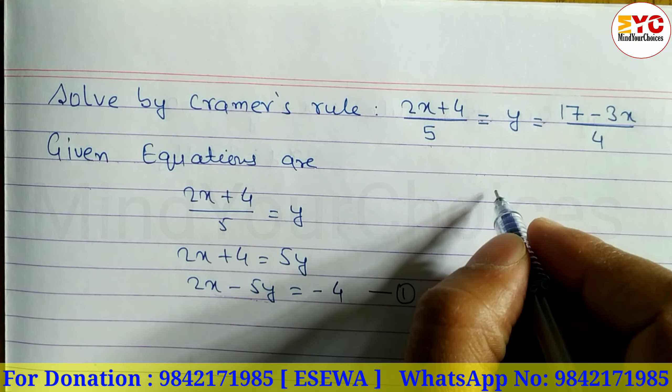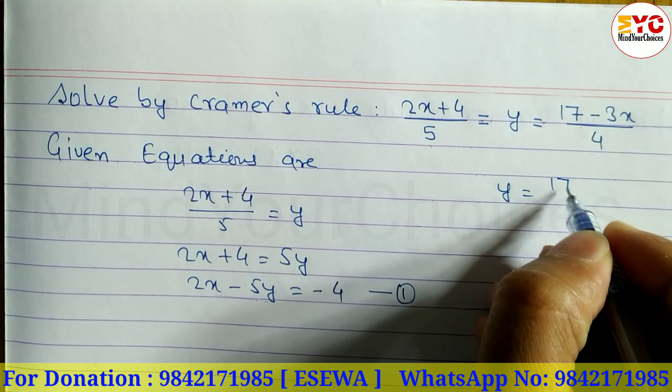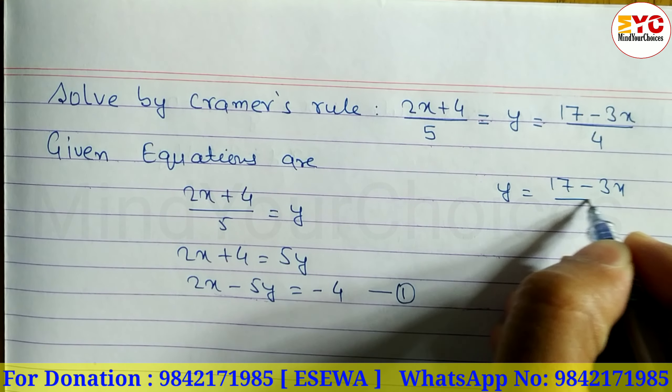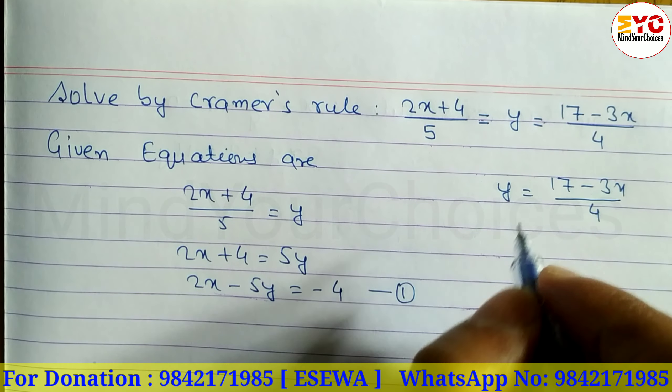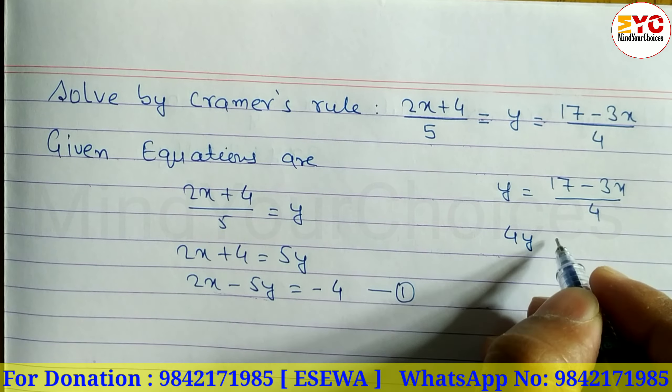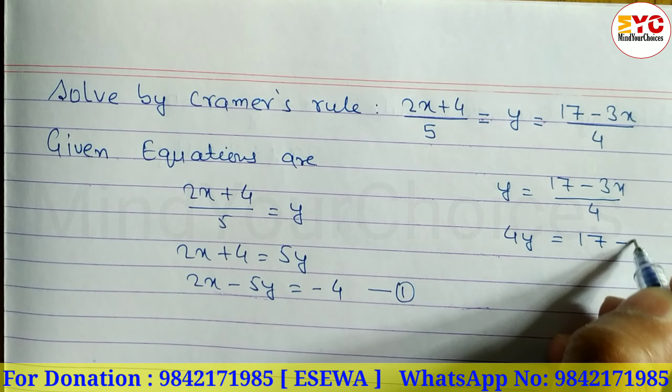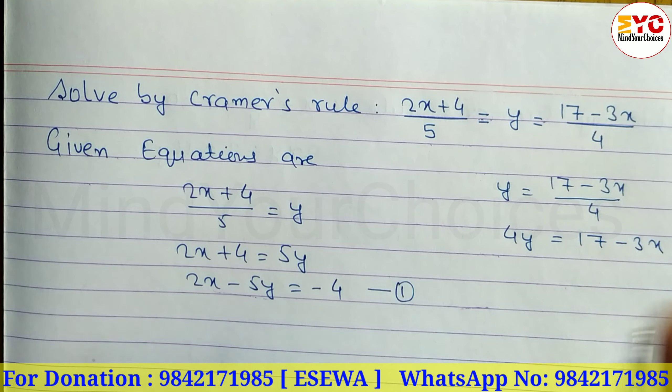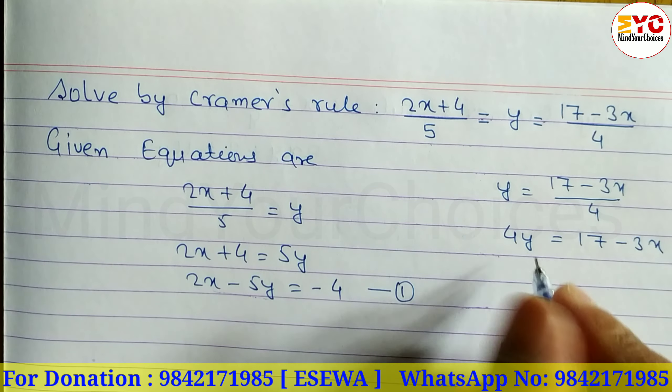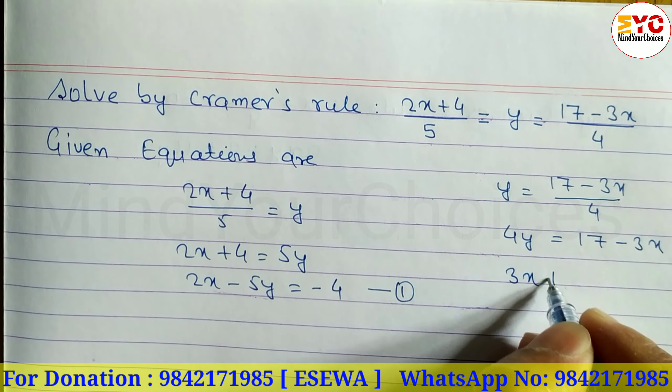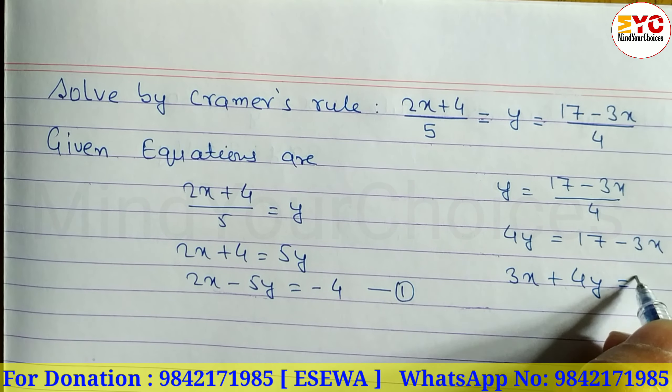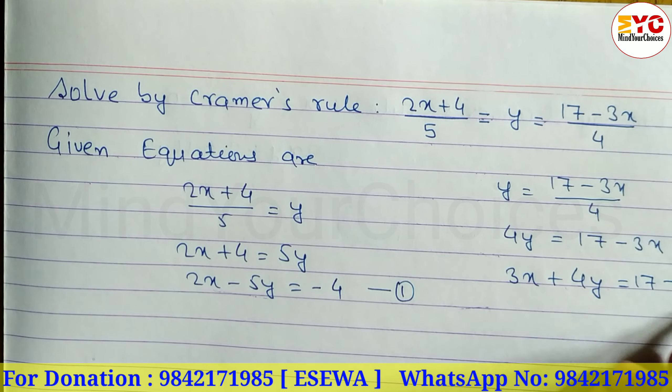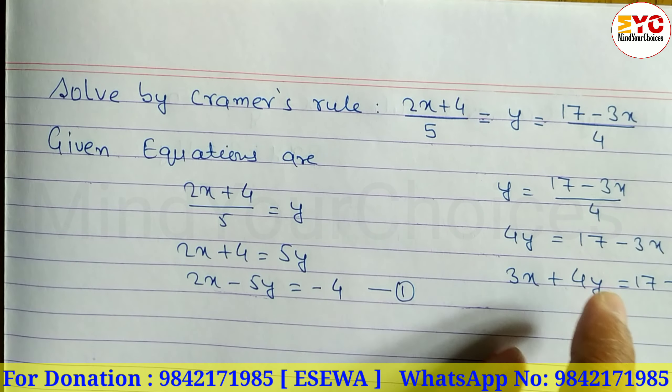Our next equation: y is equal to 17 minus 3x divided by 4. Cross multiply: 4y is equal to 17 minus 3x. Moving 3x to the left side, the negative becomes positive. So 3x plus 4y is equal to 17. This is equation 2. X comes first, then y, and then the constant number.